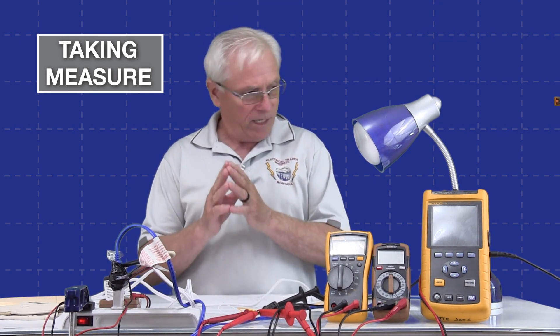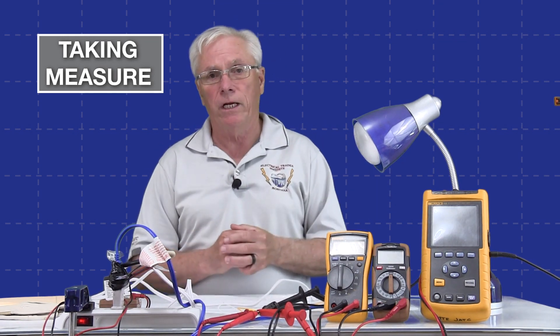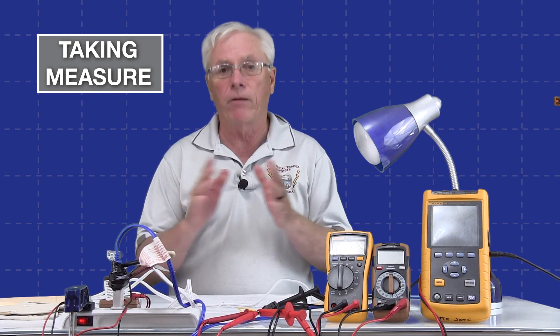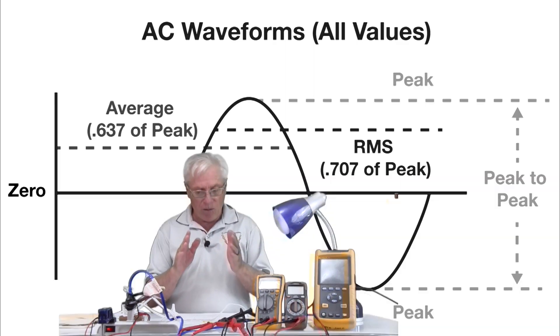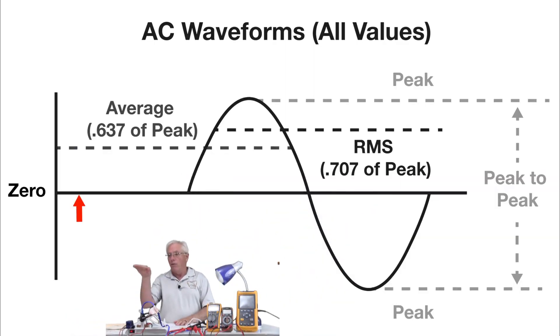As we know, alternating current changes directions at regular intervals, and so in a moment here you should see on your screen a sine wave. The horizontal line represents zero on the measured quantity, whether that be voltage or current, and it also represents time, starting at your left and extending to the right.